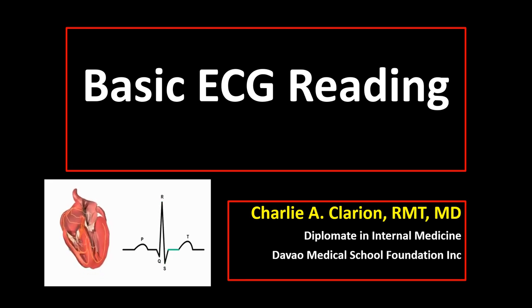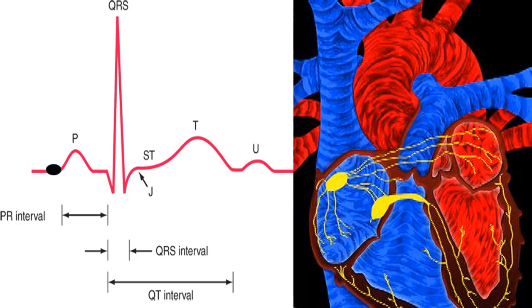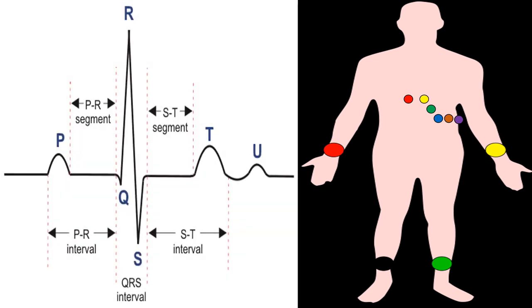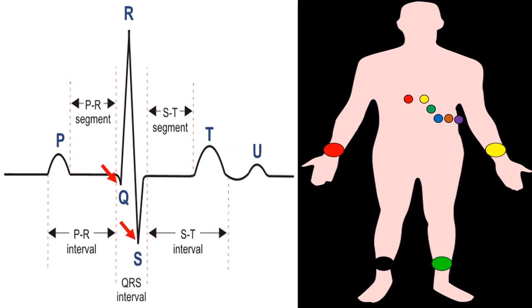Our topic for today is about all the basics in EKG or ECG reading. ECG is a graphic recording of the electrical potentials generated by the depolarization and repolarization of the atria and ventricles of the heart. Electrodes attached to extremities and chest wall detect the heart's electrical activity, which can be seen on surface ECG as waveforms labeled alphabetically as P, Q, R, S, T, and with or without U wave. You see positive deflection, negative deflection, or just isoelectric baseline.